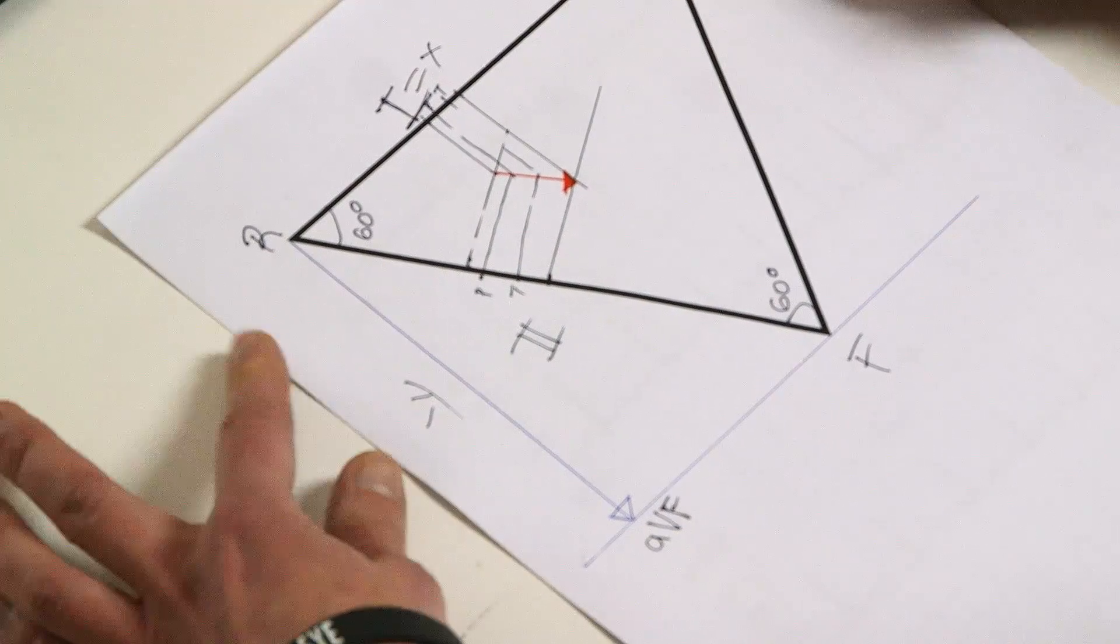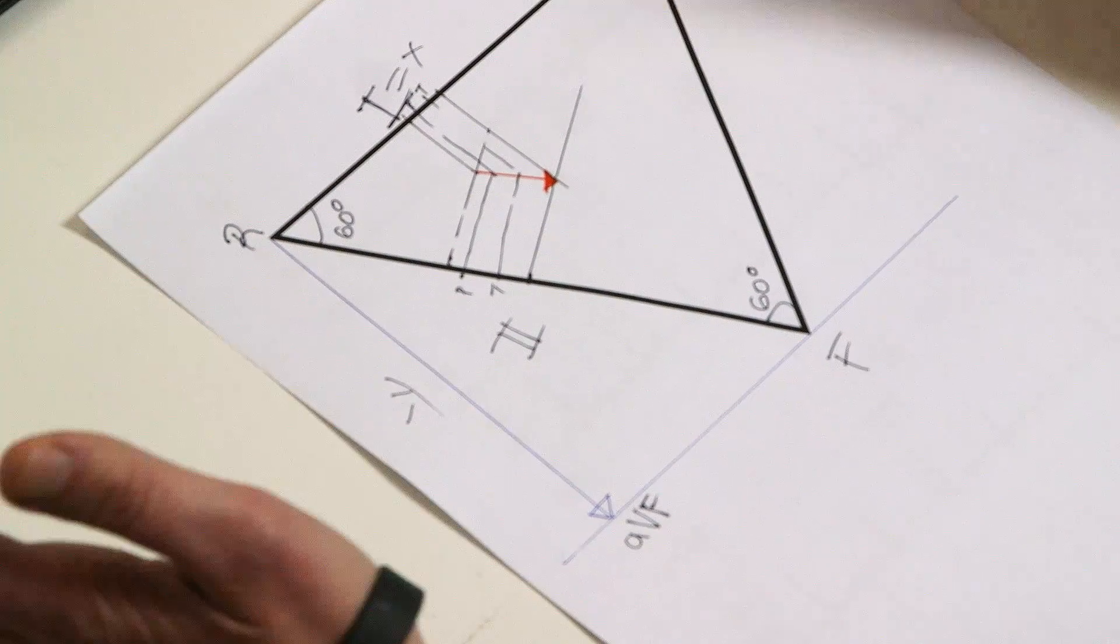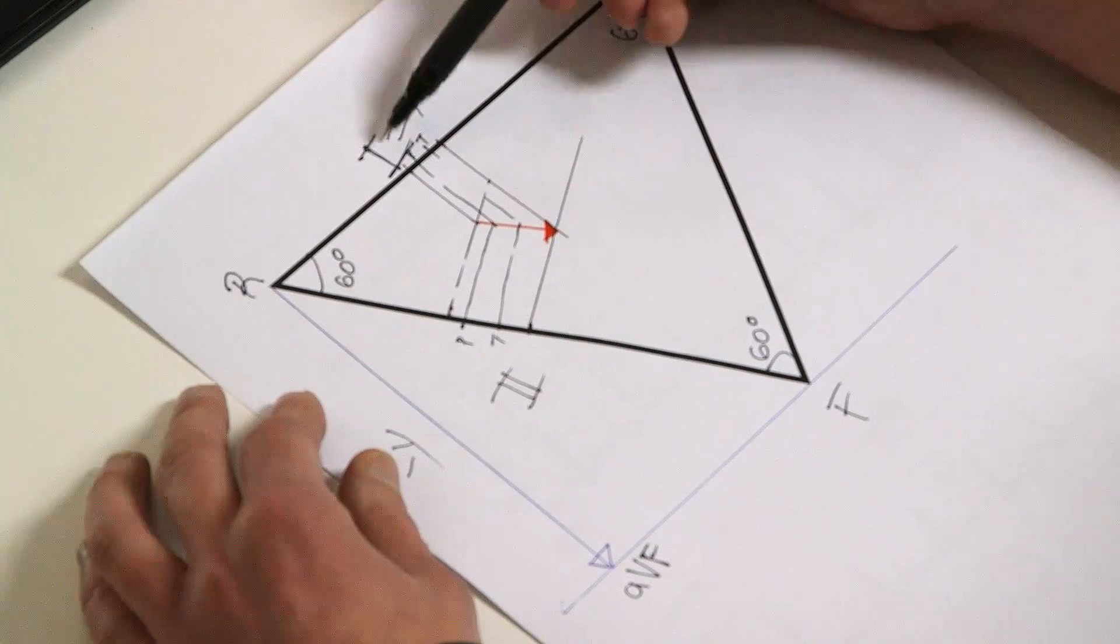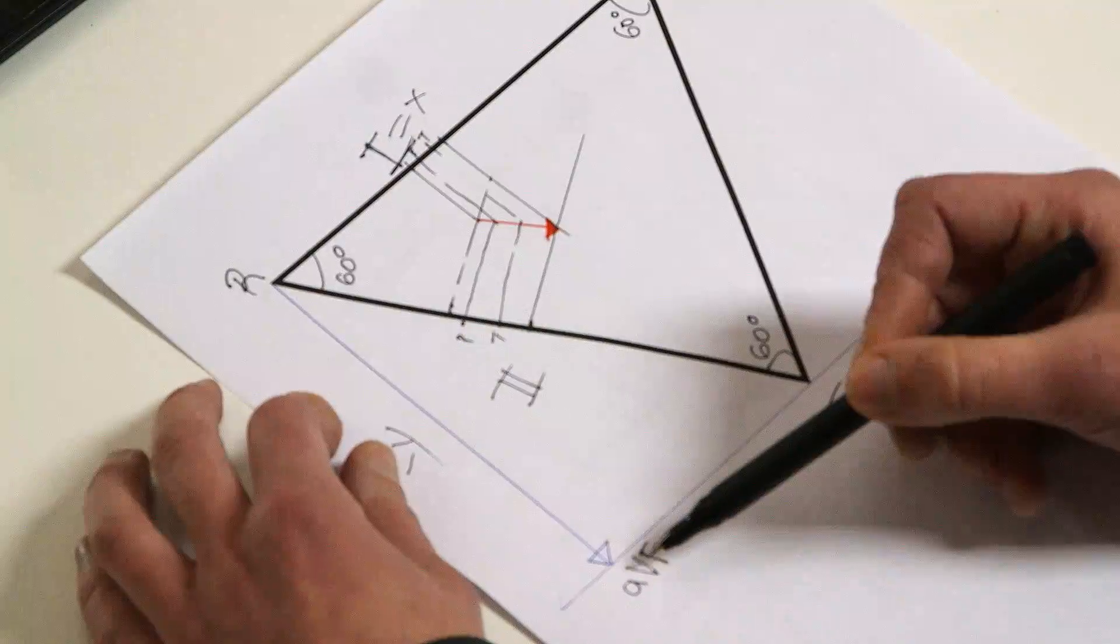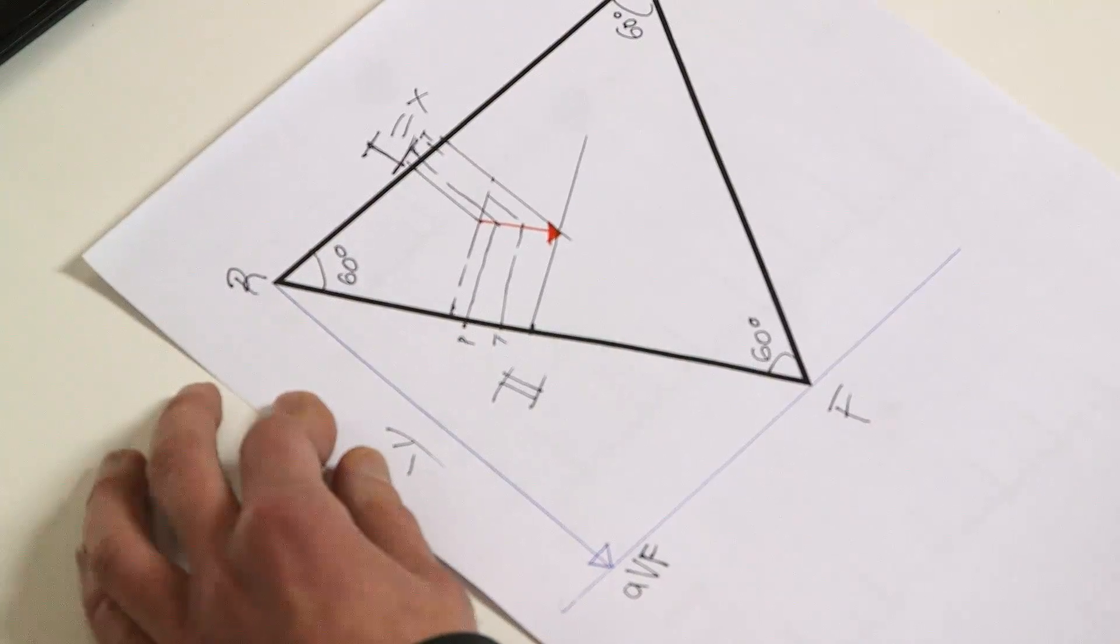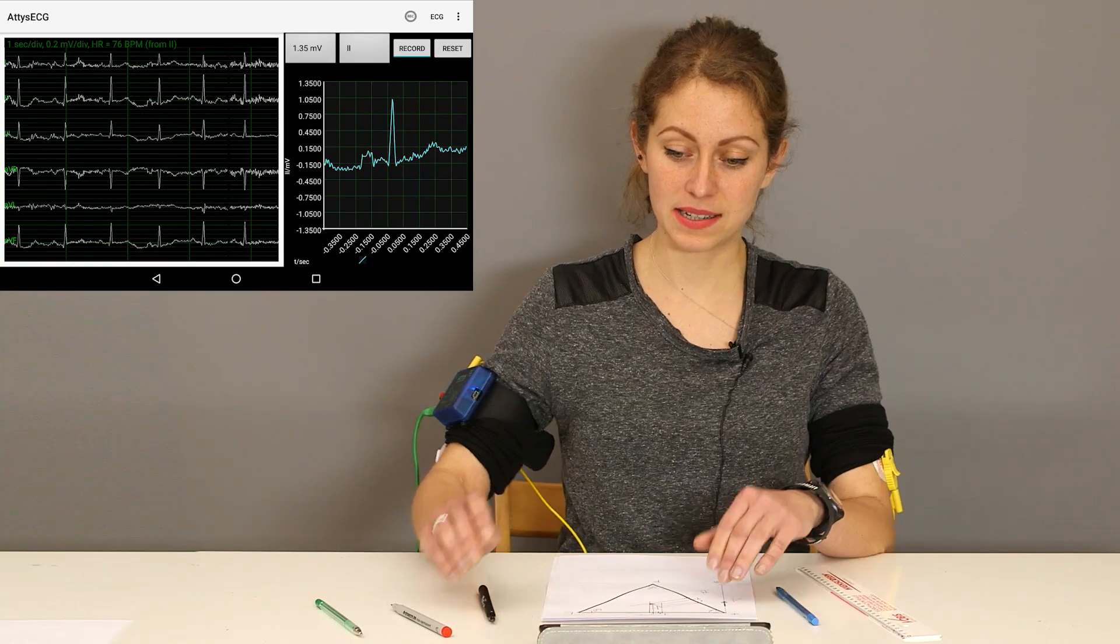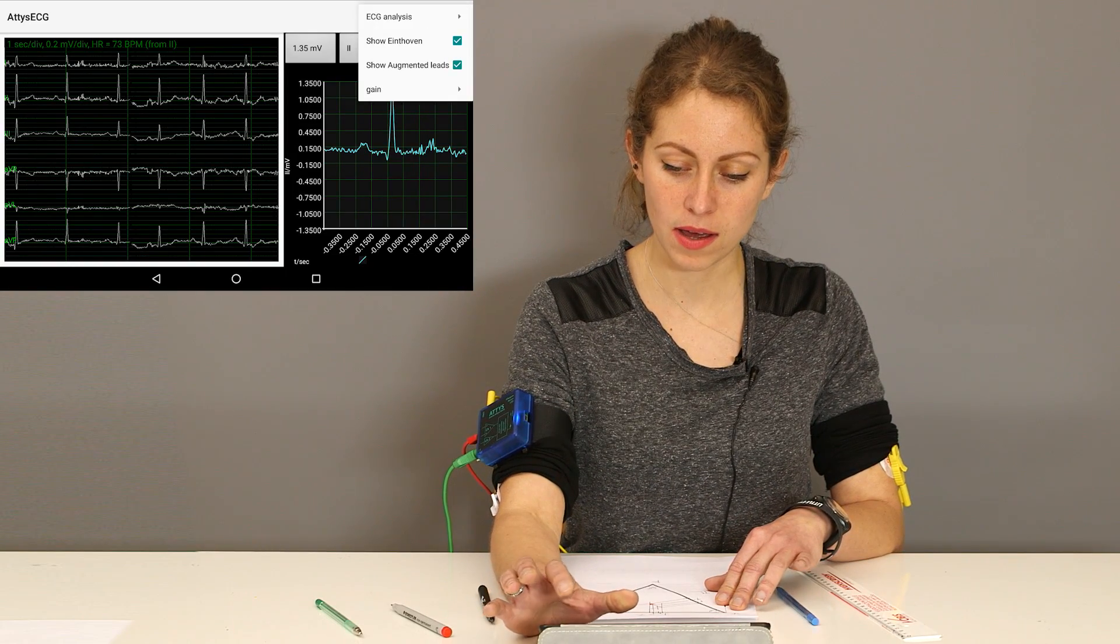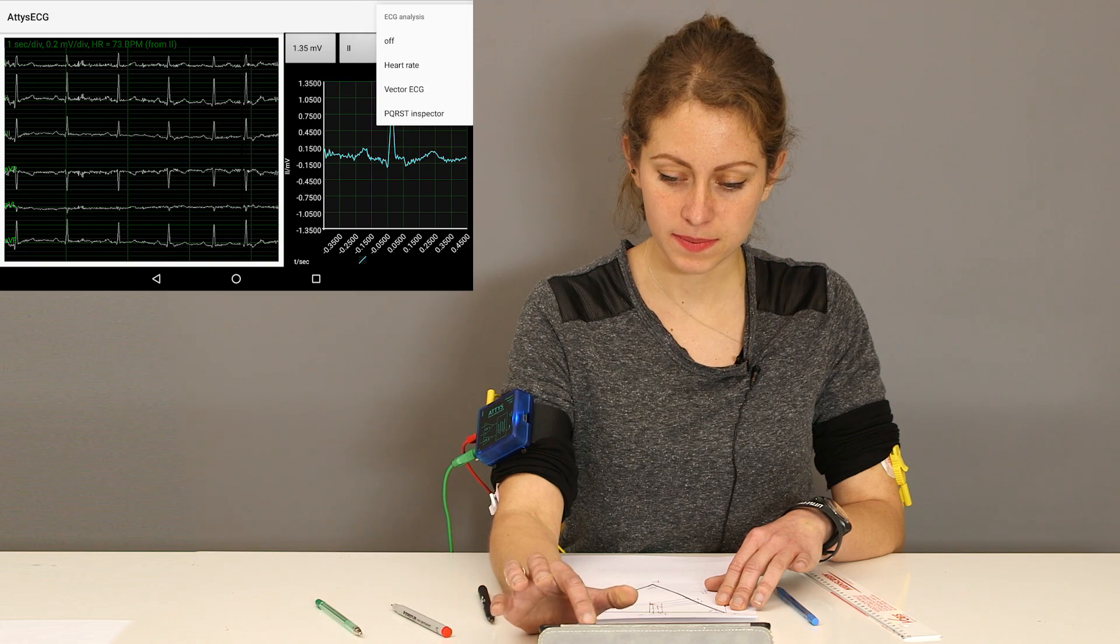So there I have it, a proper Cartesian coordinate system with Eindhoven 1 on the x-axis and AVF on the inverted y-axis. And over here we have got my vector ECG.